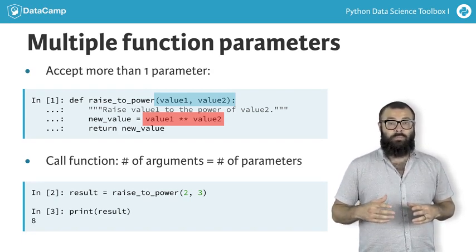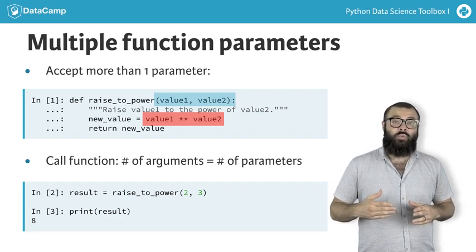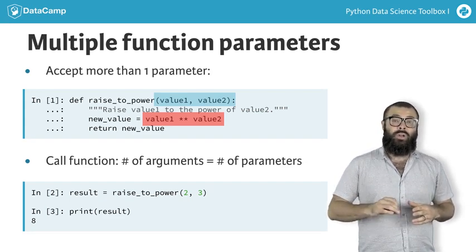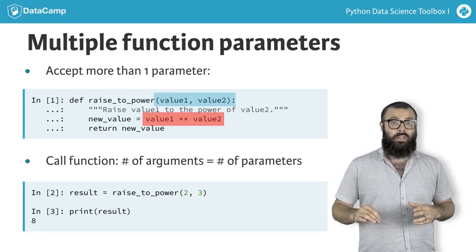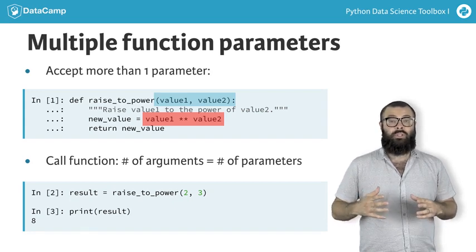Looking at the function body, this means that the computation value one to the power of value two translates to two to the power of three. This function call then returns the value eight.